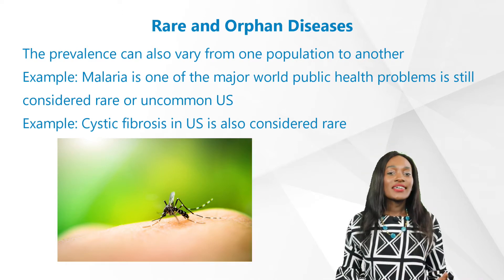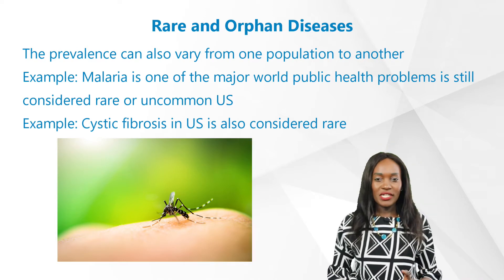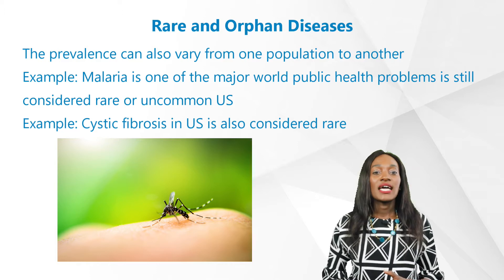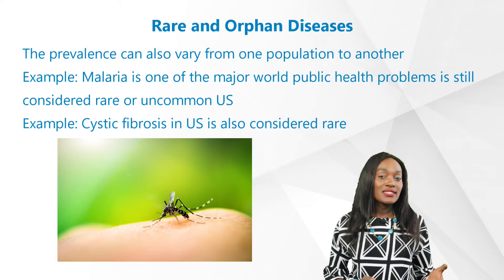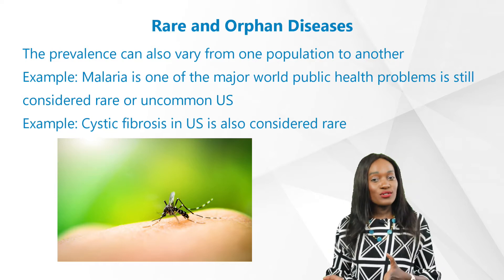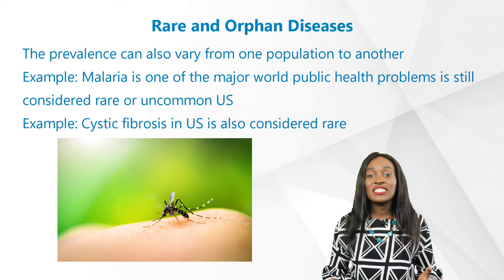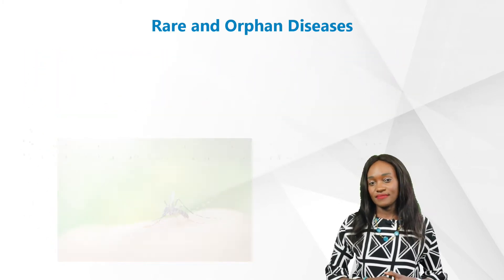Another example you may already be familiar with is cystic fibrosis, a genetic disorder that affects approximately 30,000 people in the US and is also considered rare, with a prevalence of 1 in 3,000.